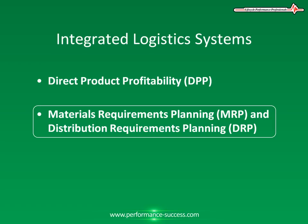Distribution Requirements Planning is the application of MRP-2 techniques to the management of inventory and material flow, effective warehousing, and transportation support. DRP systems operate by breaking down the flow of material from the source of supply through the distribution network of depots and transportation modes. This is undertaken on a time-phase basis to ensure that the required goods flow through the system and are available when required, at the right place at the right time — one of the classic distribution definitions.